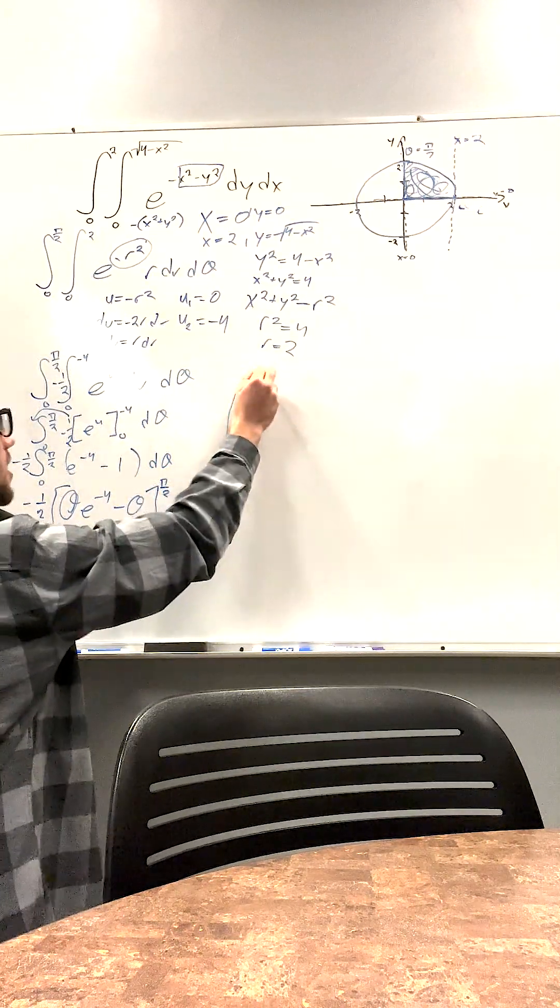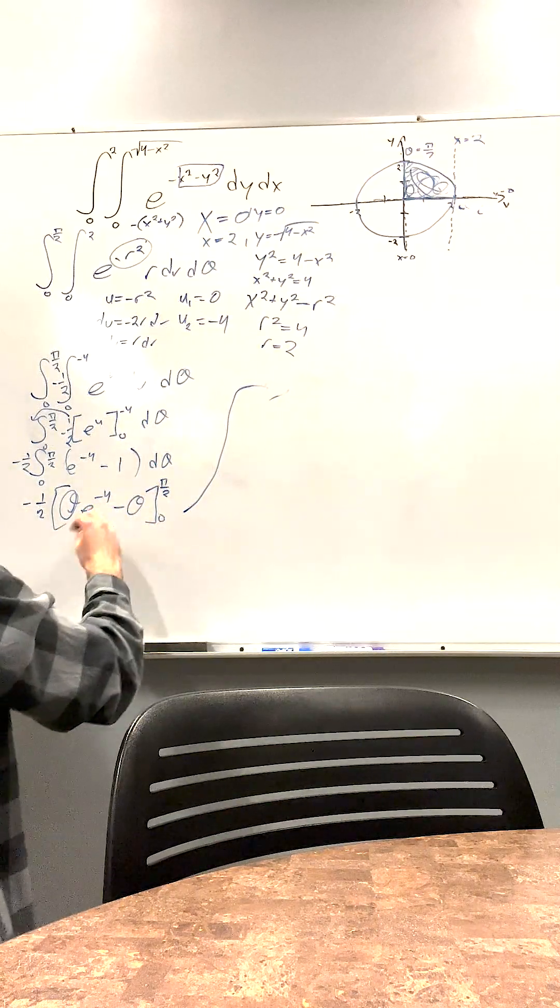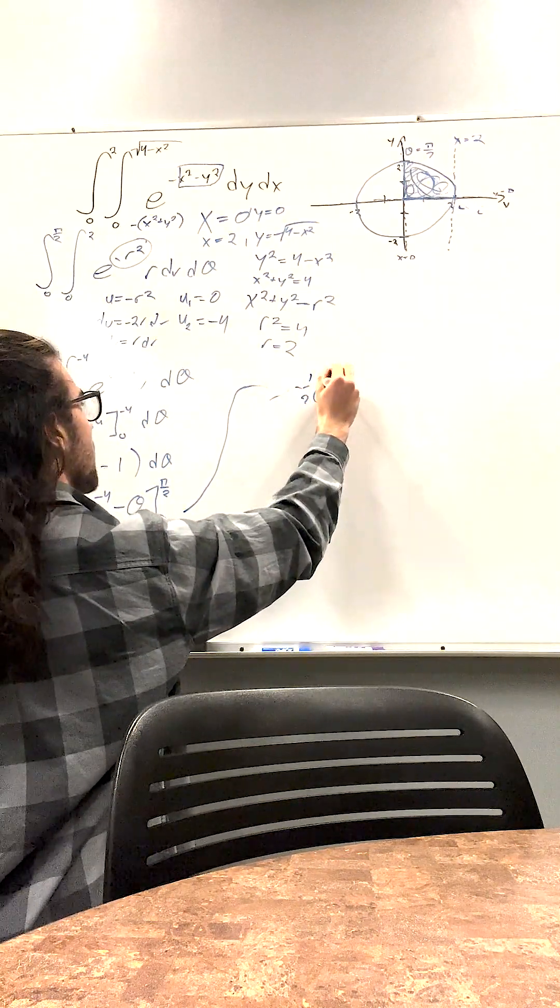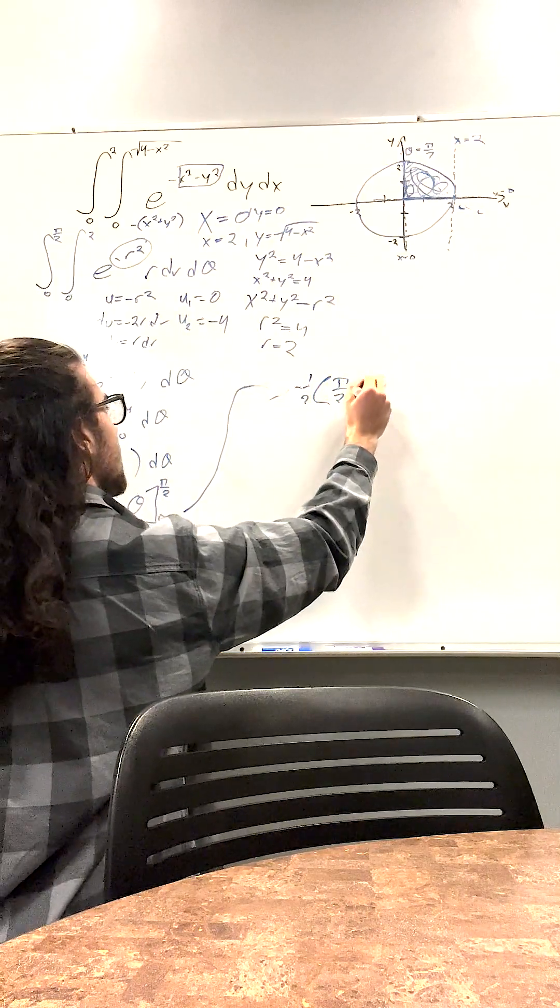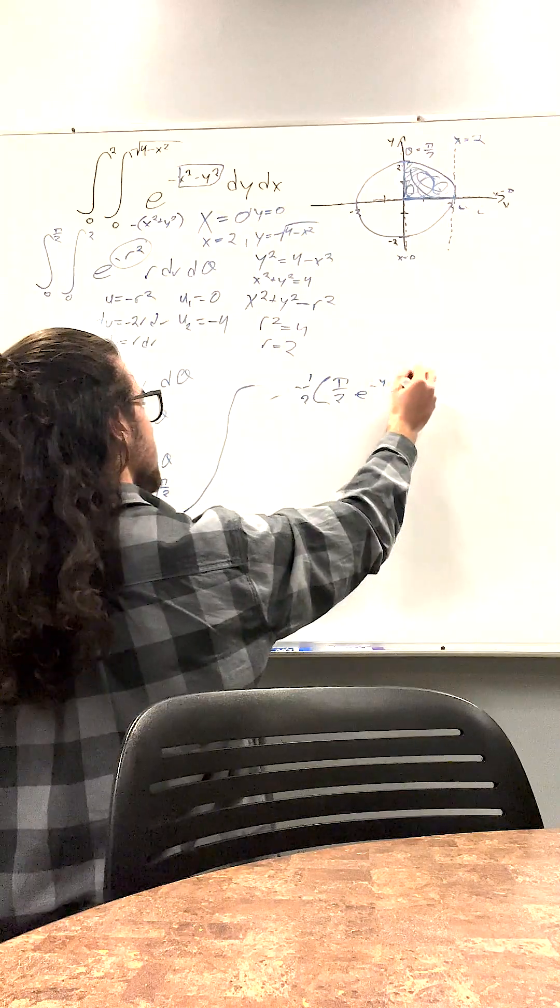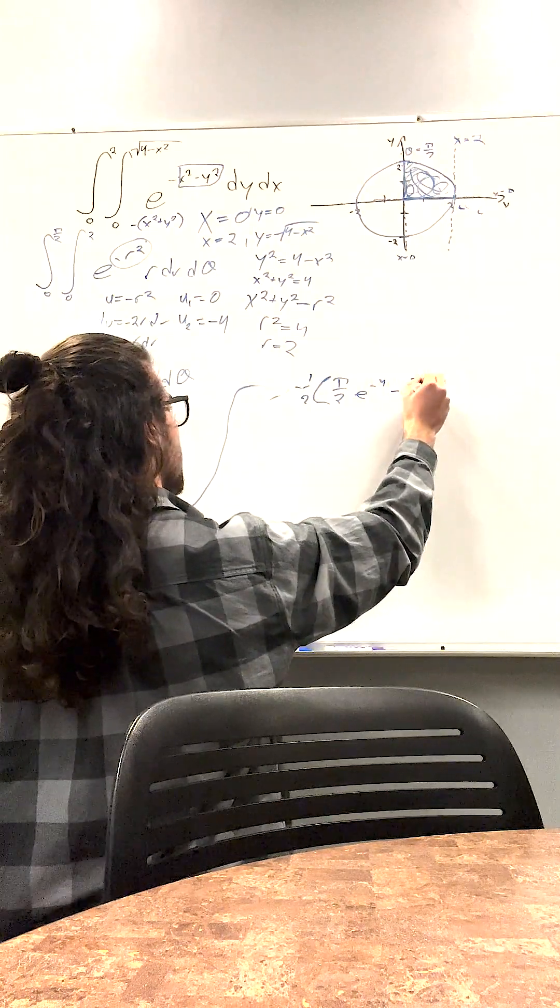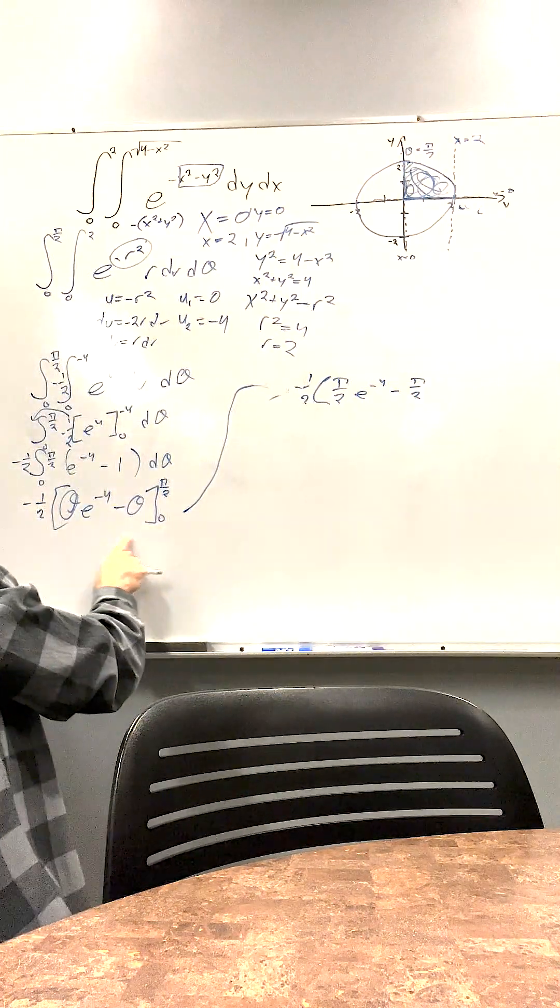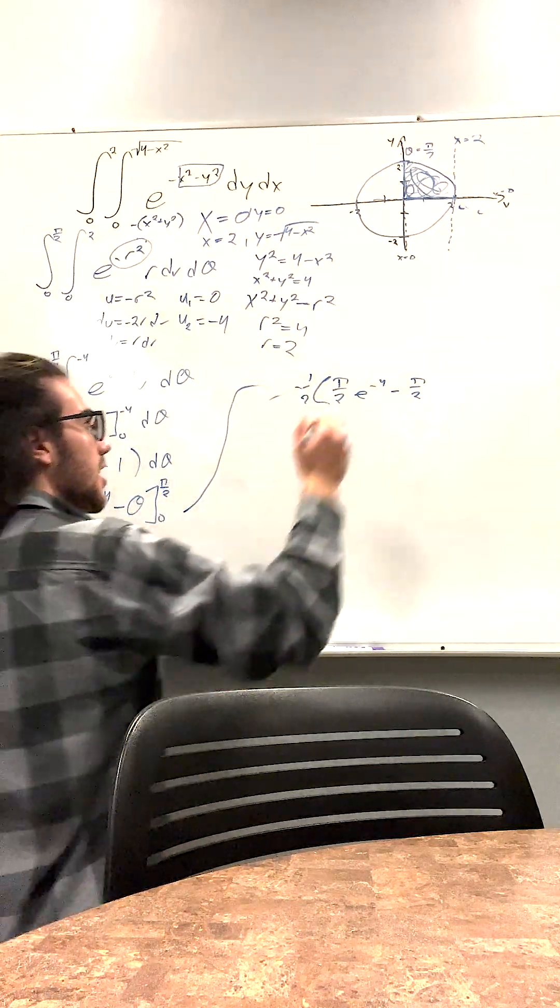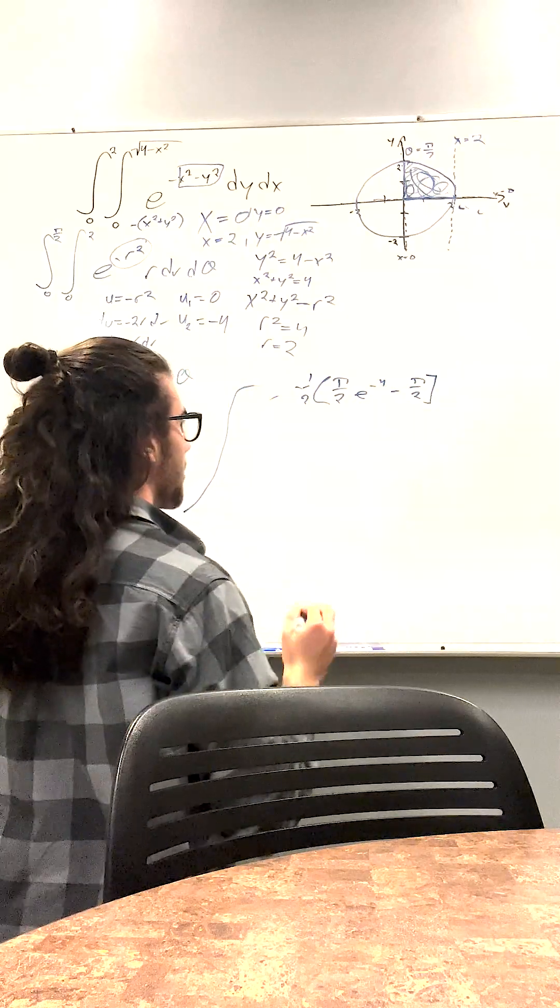We're going to move this over here. So we plug in pi over 2. Pi over 2, e to the negative 4, minus pi over 2. And then you notice here if you plug in 0 to theta, that's just going to be 0 minus 0. Don't have to worry about that.